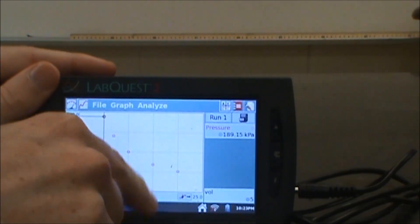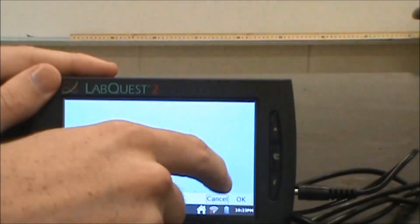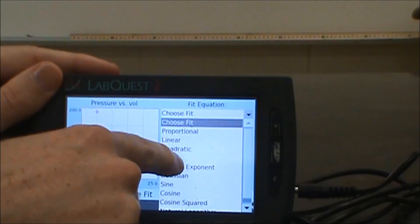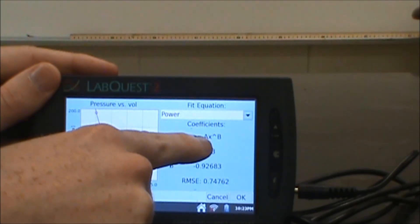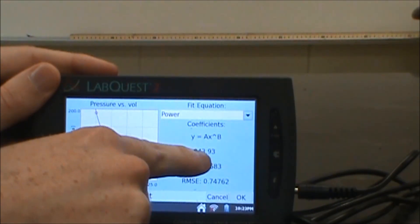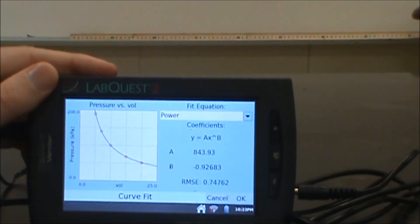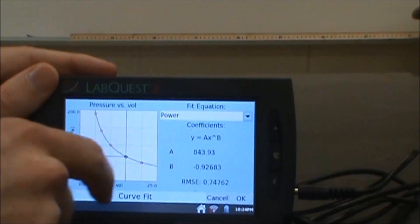Let's go ahead and take that. You hit stop. If you want to go to analyze, you can go to curve fit. Select your graph. For this one, I'm going to go to power. That gives me a x to the b power. So I have 843.93 x to this power negative 0.92683. That's the curve that fits that data.